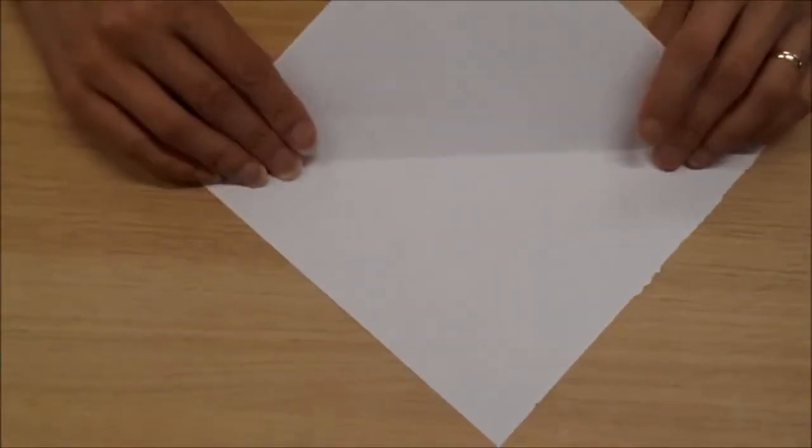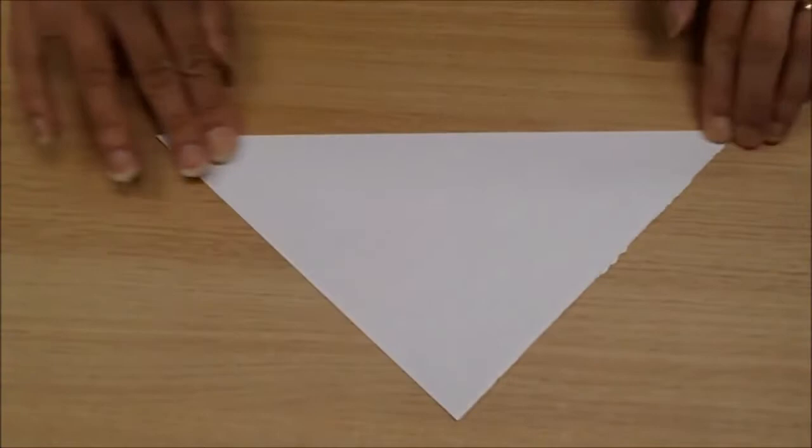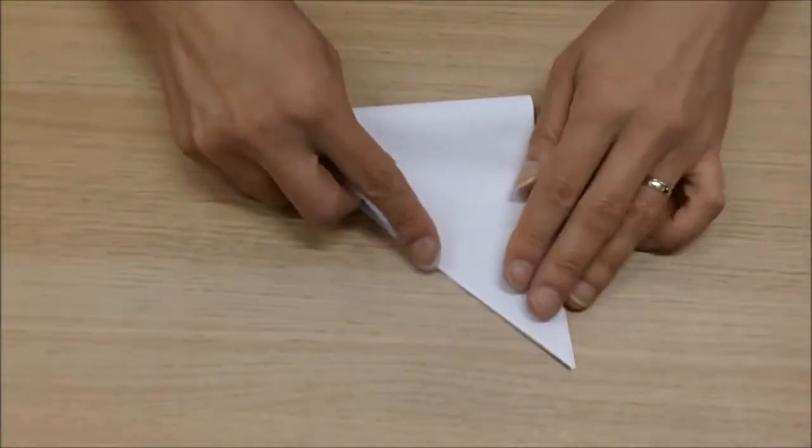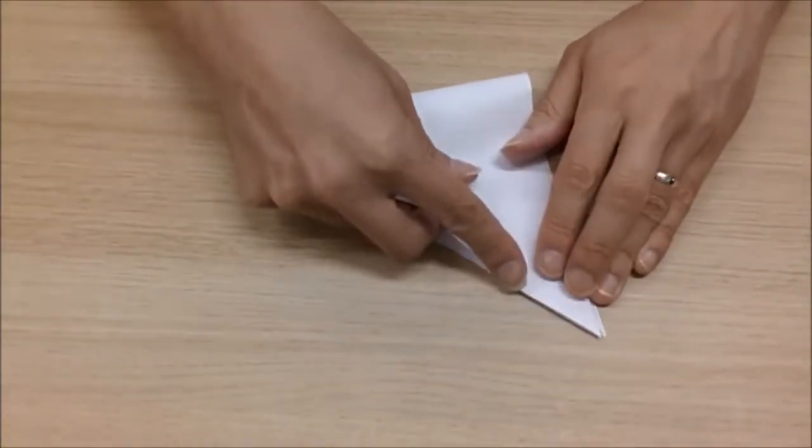First thing we need to do is make some creases. We need to make a diagonal crease like so to form a triangle. Then we need to fold it again a second time to form a smaller triangle.